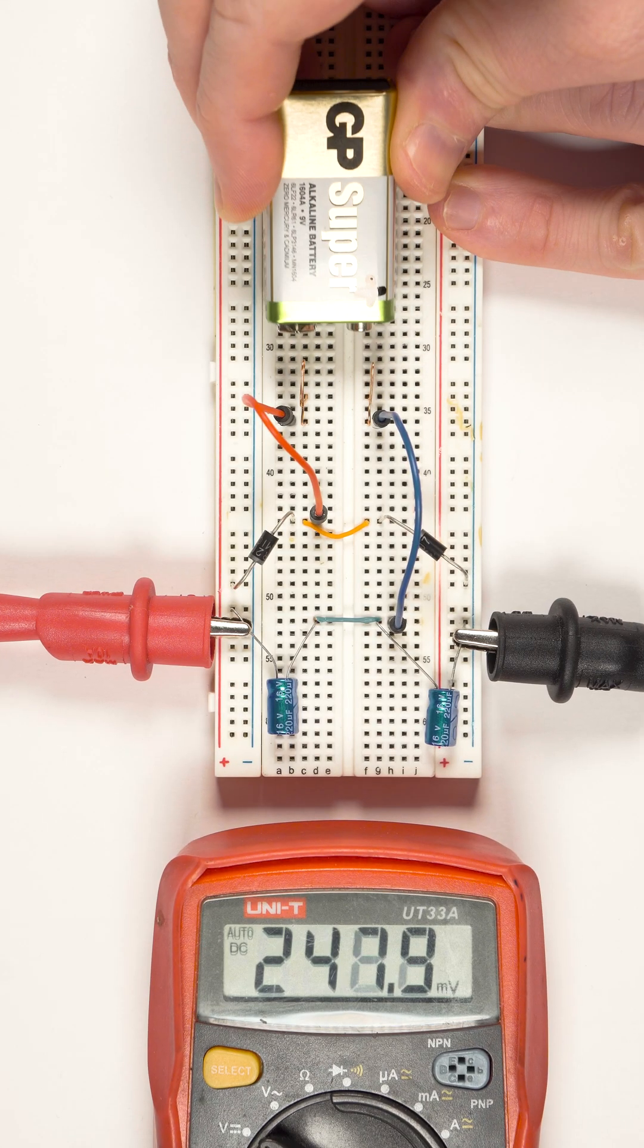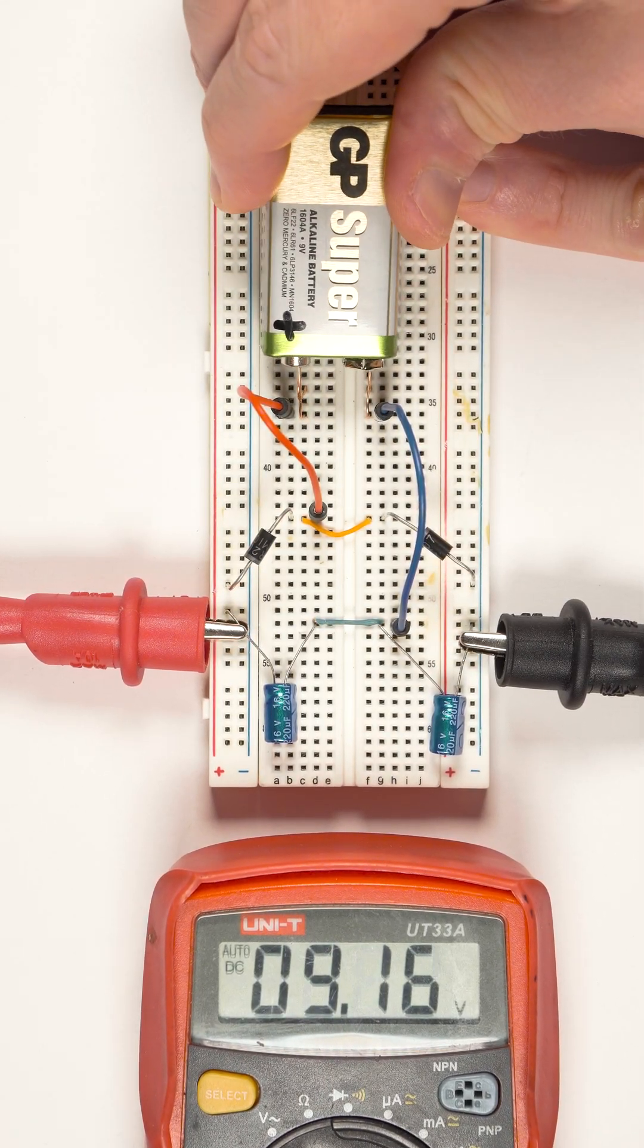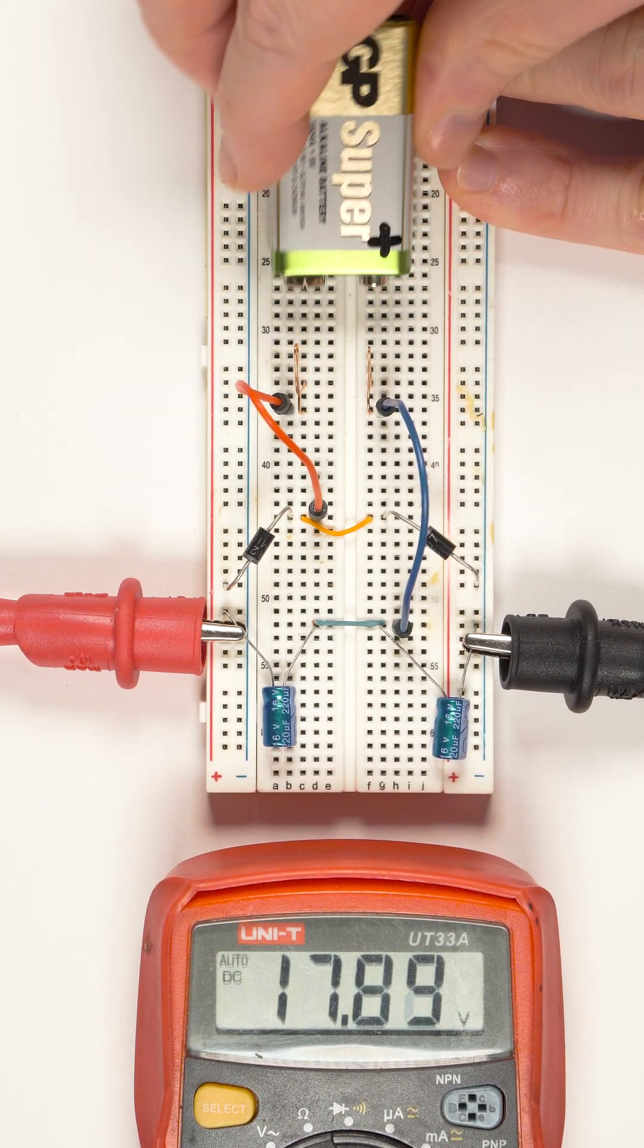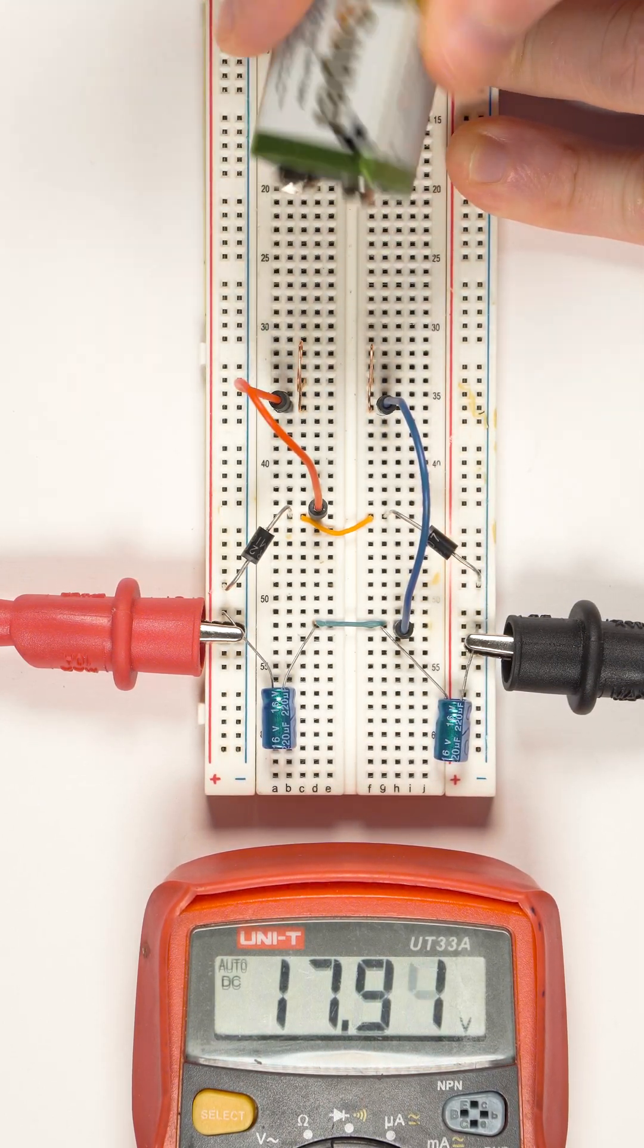Let's see how this works. As I keep switching the polarity, emulating AC, the multimeter shows DC 18 volts.